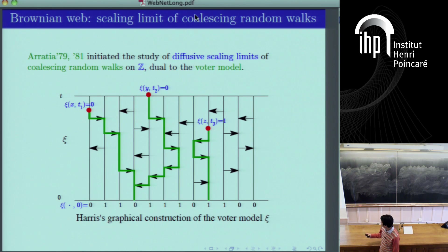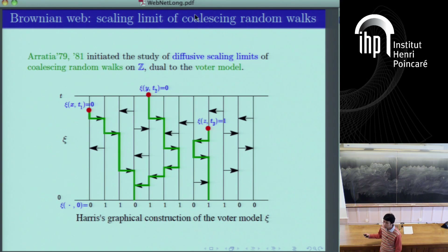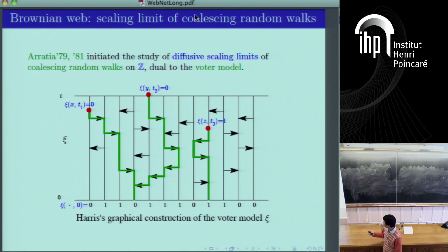If you look at a single genealogy, it is just a random walk in continuous time. The arrows follow a Poisson point process generated by Poisson clocks, so looking backward in time these are still Poisson point processes — a continuous-time random walk. The joint genealogies of two individuals at different space-time points evolve independently as random walks until they meet. Once they meet, they coalesce into a single genealogy — they have found their most recent common ancestor. So the voter model is dual to the coalescing random walks.